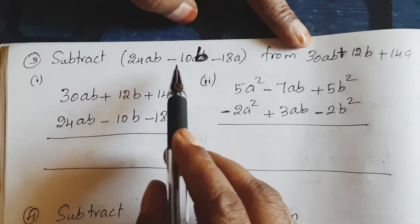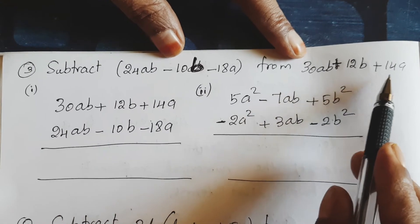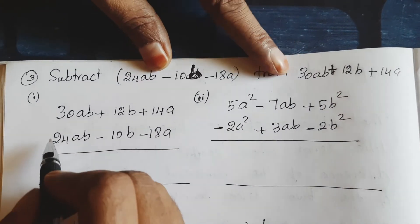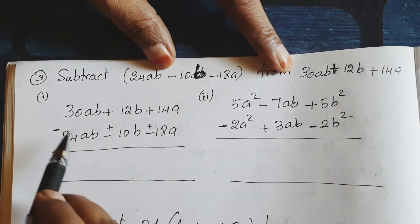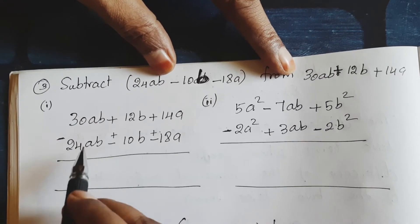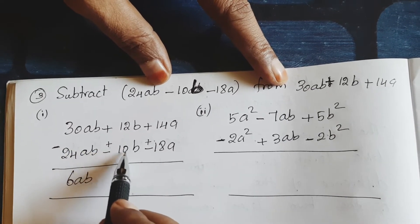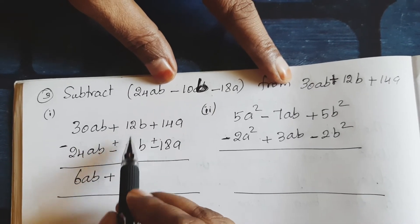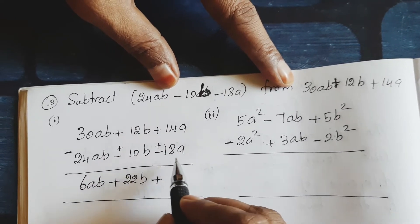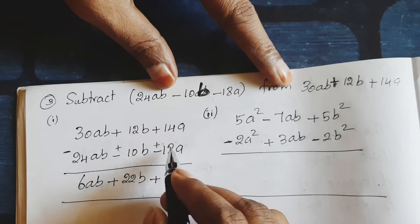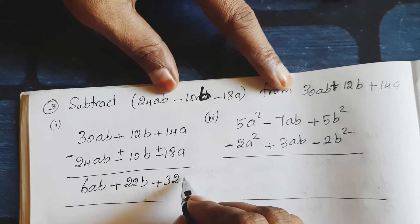Next question: subtract 24ab minus 10b minus 18a from 30ab plus 12b plus 14a. Change the sign. Then: 30ab minus 24ab gives 6ab. Plus 12b plus 10b — same positive sign, 10 plus 12 gives 22b. Then plus 14a plus 18a — same sign, 14 plus 18 gives 32a. So the answer is 6ab plus 22b plus 32a.